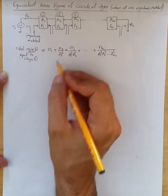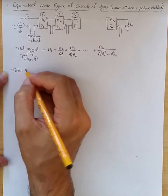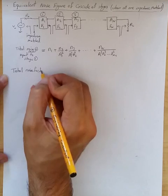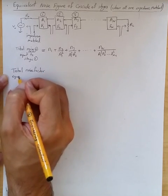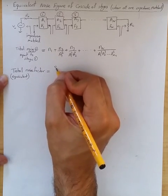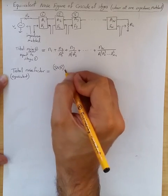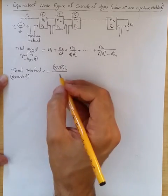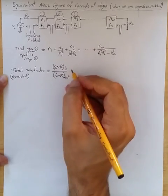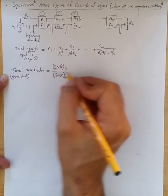So we know this. Then we can say total or overall equivalent noise factor or equivalent is equal to, by the definition, signal-to-noise ratio at input, the power of the signal to power of the noise at input to signal-to-noise ratio at output, final output. We want to see how much this is degraded, which is referred to as noise factor.